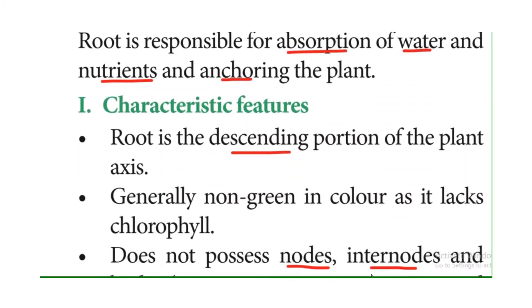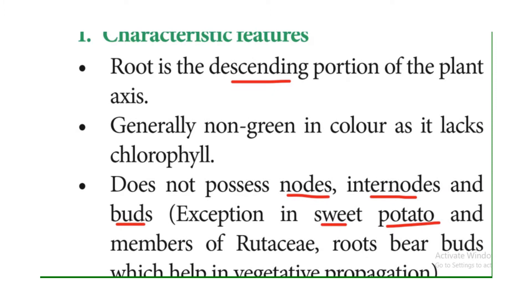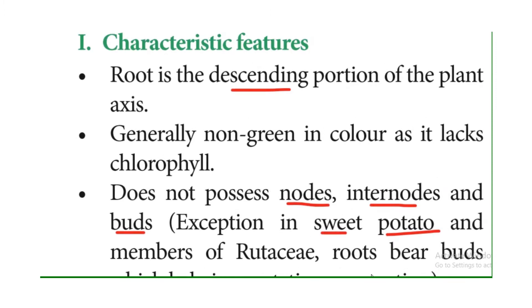The characteristic features of the root system: the root is the descending portion of the plant axis, and it is non-green in color because it has no chlorophyll pigments.